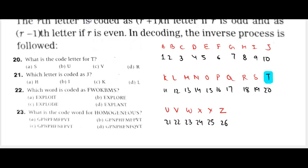T is at an even position, so one term before — S. Next, J is also even. If even, one term before. So one term before J is I — exactly right. I is the answer.